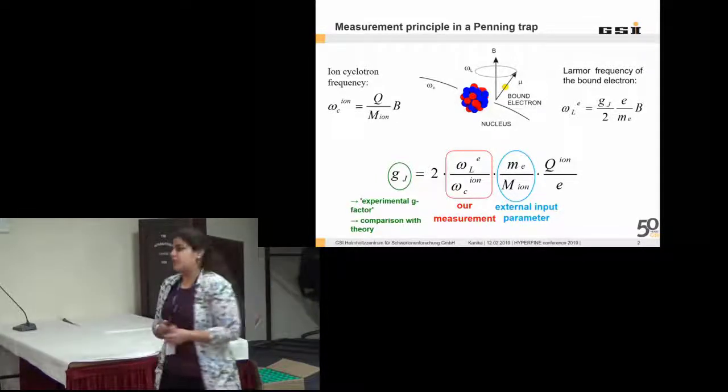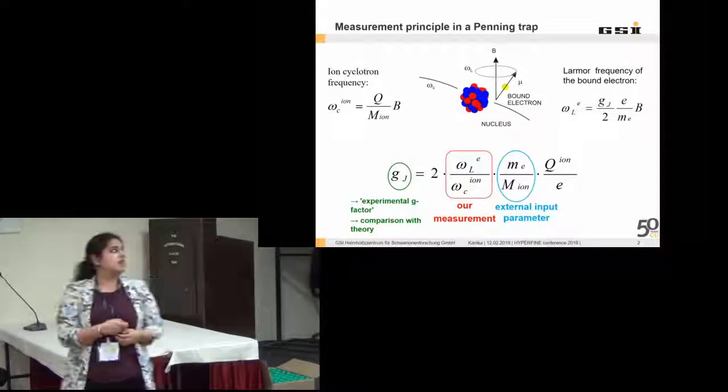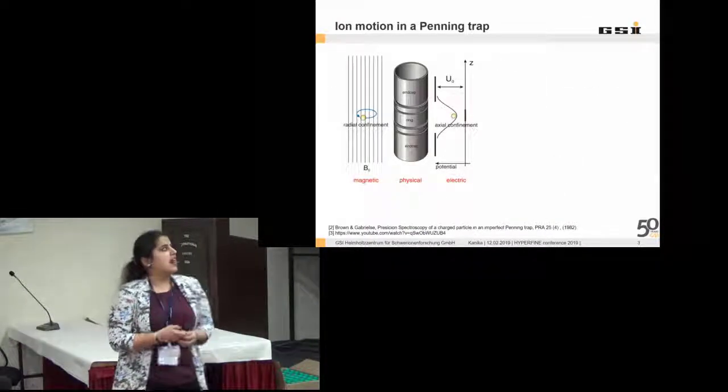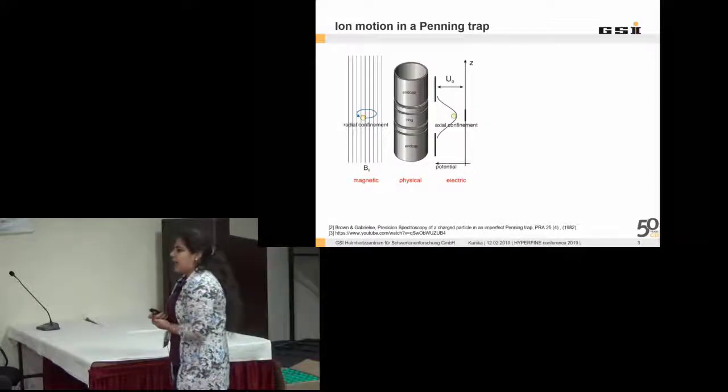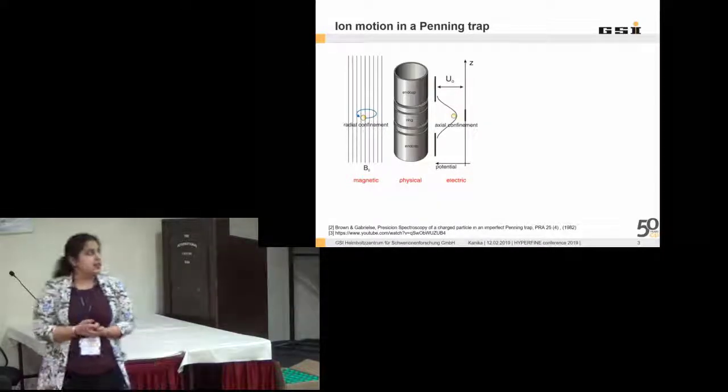First, I will talk about the measurement of omega c, that is the cyclotron frequency. To go through that, I will talk briefly about the ion motion in a Penning trap.